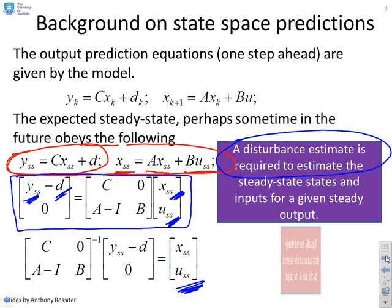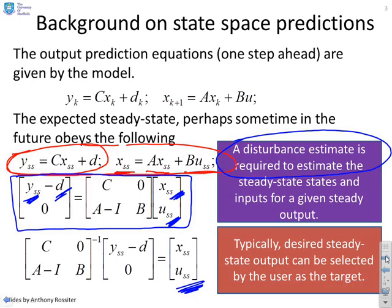Now the other thing you might want to notice finally is the steady-state output is usually a value that you can choose. It's likely to be something like the target. I want the steady-state value to be 3 or 40 miles an hour or something like that. And therefore, on the left, you largely have known variables and you can use these in order to infer what the required steady-state state and input will be. And you'll notice that they will vary as your estimate for the disturbance varies.